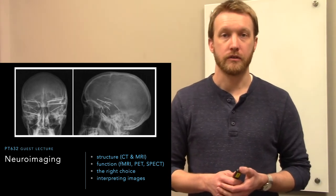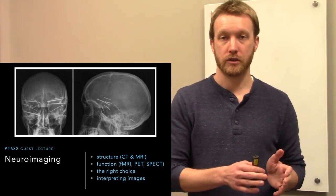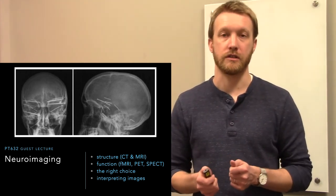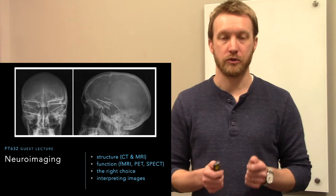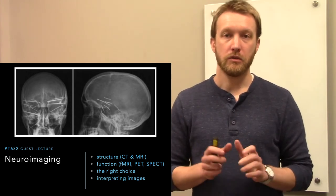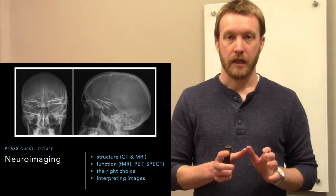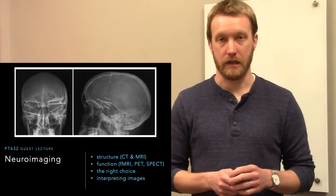We'll start off by going over the ways that we look at the structure of the nervous system and then some imaging techniques that we have to look at the function of the nervous system. We'll compare between those and then we'll look at a few different disorders and how imaging can help us identify these.